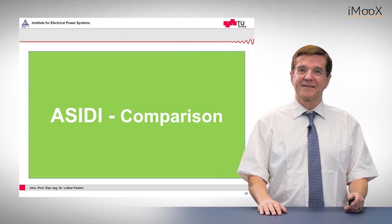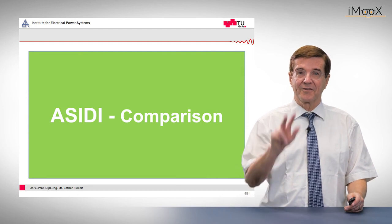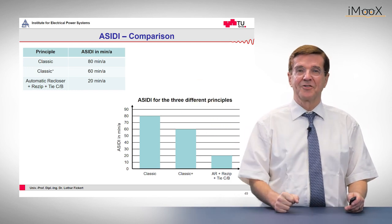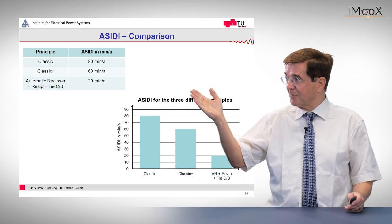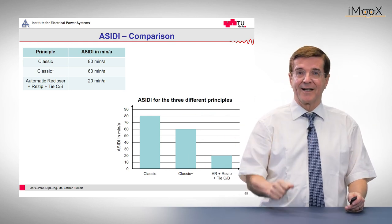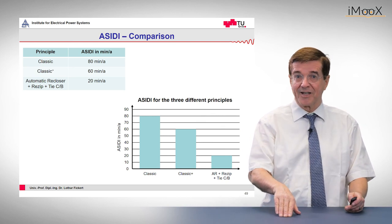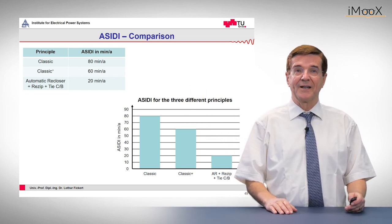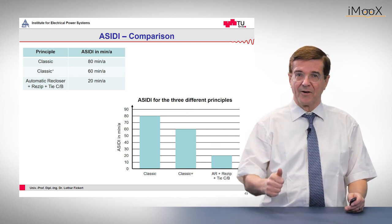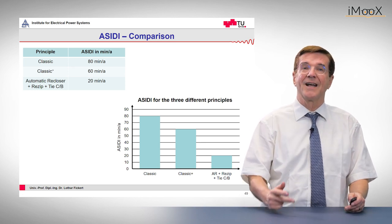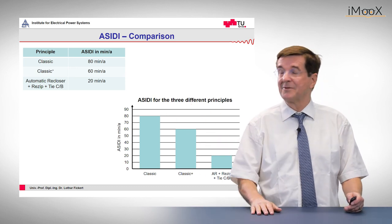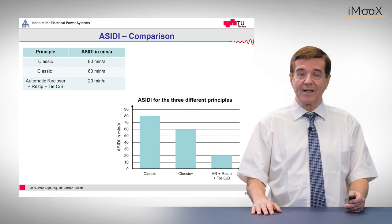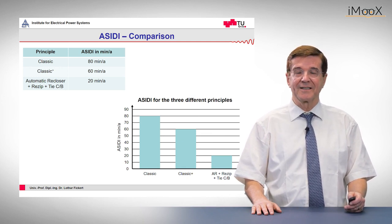Finally, I would like to compare these network reliability indices for the three types of networks we have analyzed. First, the classic network with one protection relay per feeder gives a weighted outage time of 80 minutes per year. If we introduce a second relay and install more protection devices, we reduce the outage times and increase the reliability of the network by 25% to 60 minutes per year. But if we install a ring-type network with automatic re-closers and a tie circuit breaker, we arrive at an outage time of 20 minutes — only a quarter of the original value. This shows that protection is well positioned to reduce network outage figures and increase network reliability.